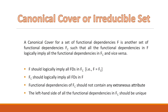So what is an extraneous attribute? An extraneous attribute is any attribute which, if removed from the functional dependencies, leaves the closure set of different attributes within the set of functional dependencies unchanged. And our last point is that the left-hand side of all the functional dependencies in FC should be unique.